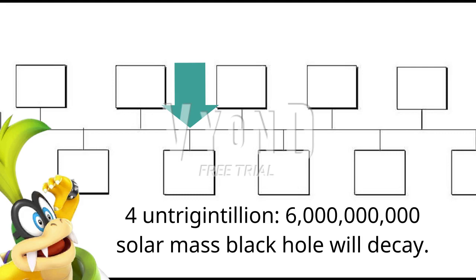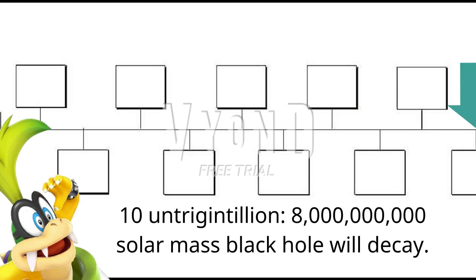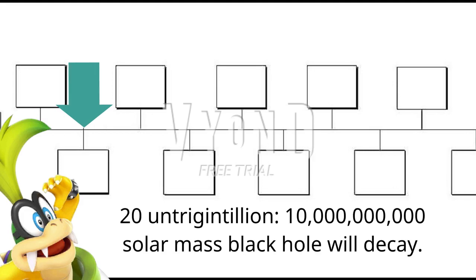4 Untrigentillion: a 6 billion solar mass black hole will decay. 7 Untrigentillion: a 7 billion solar mass black hole will decay. 10 Untrigentillion: an 8 billion solar mass black hole will decay. 15 Untrigentillion: a 9 billion solar mass black hole will decay. 20 Untrigentillion: a 10 billion solar mass black hole will decay. 70 Untrigentillion: a 15 billion solar mass black hole will decay.